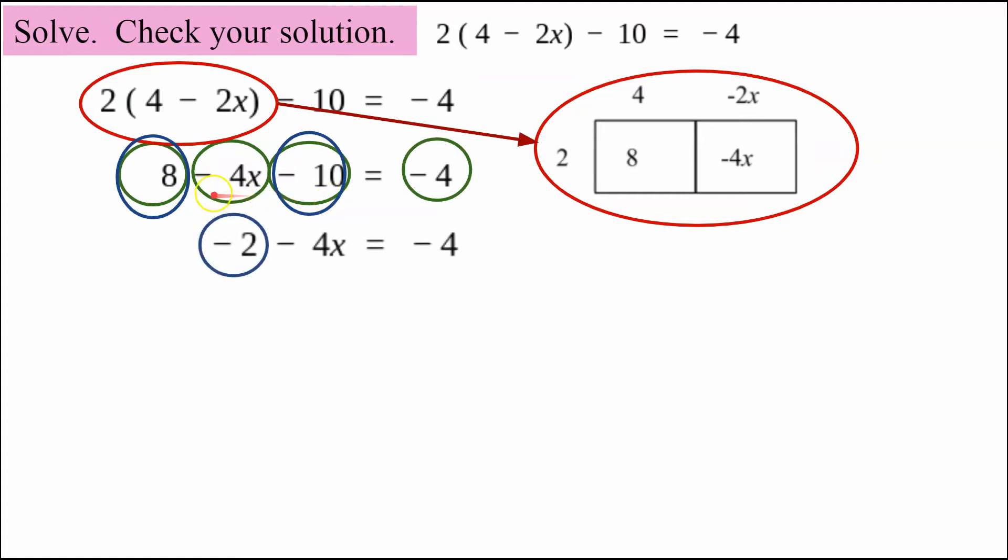8 and negative 10 is negative 2. So you can see I've combined those terms, still have negative 4x equals negative 4.